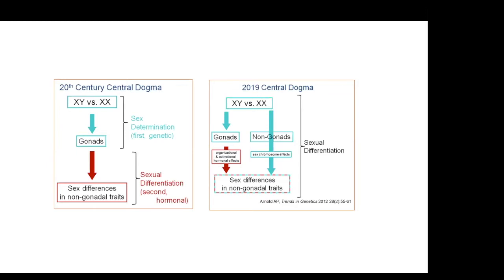The hormone factors we divide into organizational — the permanent effects. A boy is born with a penis because he had testosterone prenatally; that's an effect of testosterone that lasts throughout his life regardless of whether he has testosterone at any later time. That's a permanent organizational effect. But then in adulthood, males and females differ in their levels of gonadal hormones — estrogens, progestins, et cetera — and that causes transient sex differences. When the hormone goes away, the effect goes away.